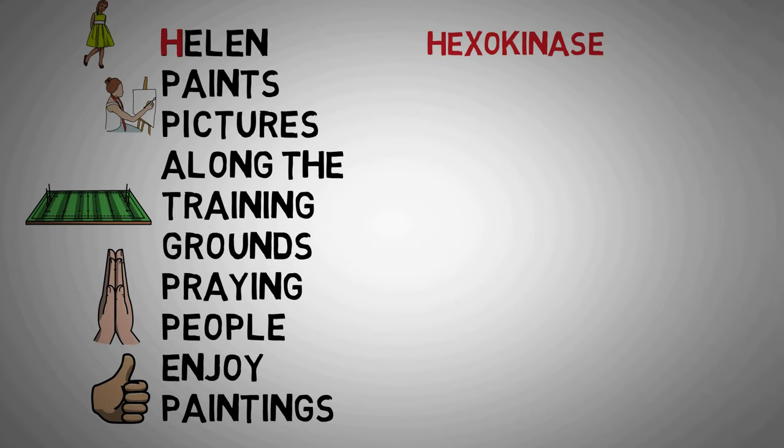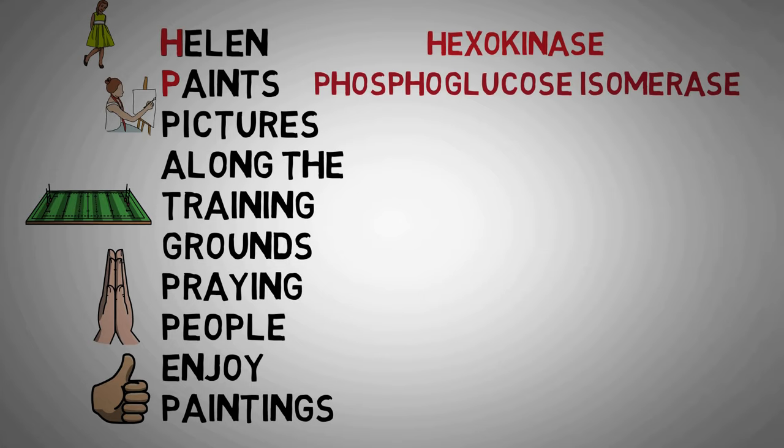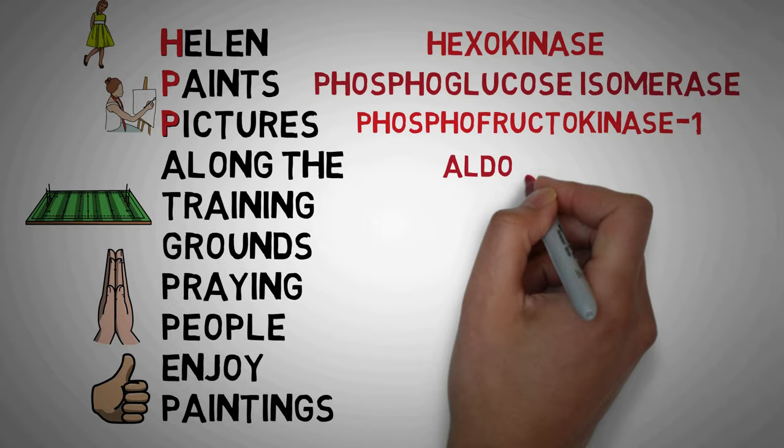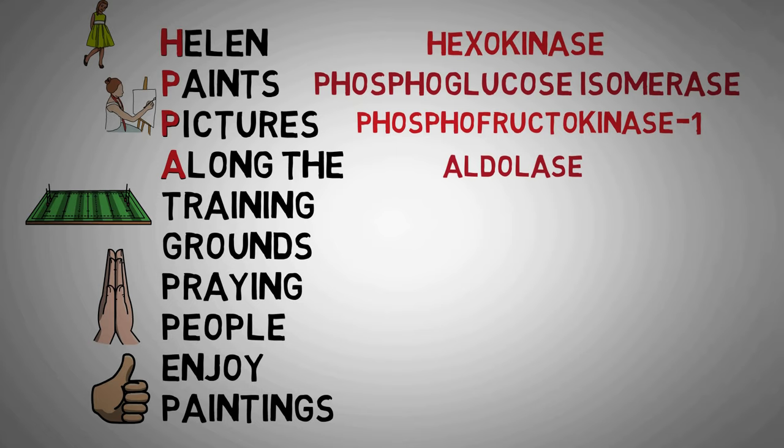Now in this mnemonic, the H stands for hexokinase, which is the first enzyme involved in glycolysis, which converts glucose into glucose 6-phosphate. The P in paints stands for phosphoglucose isomerase, which converted glucose 6-phosphate to fructose 6-phosphate. The next letter we have in this mnemonic is again a P, and the enzyme here is phosphofructokinase 1, which converted fructose 6-phosphate to fructose 1,6-bisphosphate.